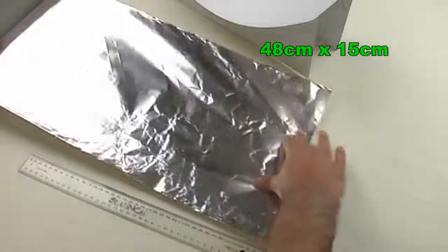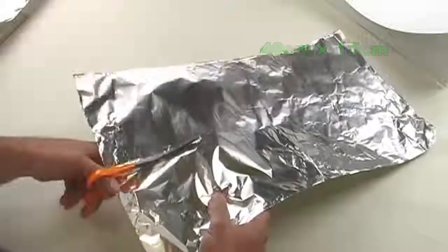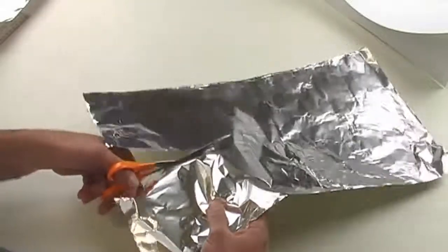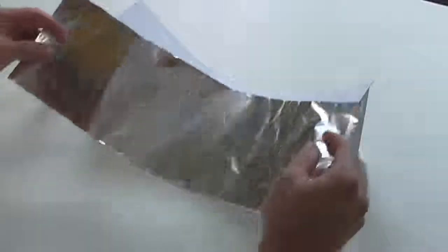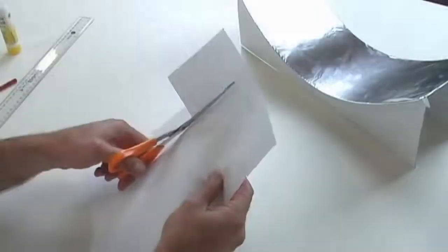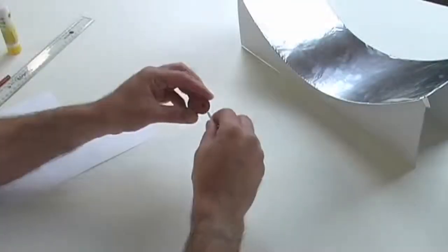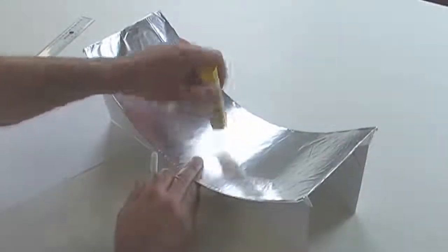Cut out a 48 centimetre by 15 centimetre length of aluminium foil. And use glue to stick it onto the card. Finally, place a 10 centimetre long rolled up piece of paper through the hole in a rubber stopper and glue the stopper onto the reflector at its vertex.